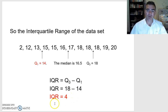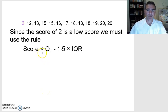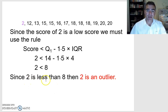We still haven't found whether 2 is an outlier or not. We use the formula where the score has to be less than the lower quartile minus 1.5 times the interquartile range. Our score is 2, our lower quartile was 14, and our interquartile range was 4. We work that out on our calculator and we get 8. Now, a score of 2 — is it less than 8? It is. And because it is less than 8, then 2 is an outlier.